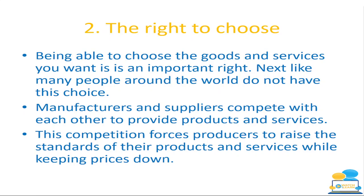It's the same with food — when you go to a restaurant you have so many different choices that a lot of people don't. Manufacturers and suppliers compete with each other to provide products and services — this is why we have so many different forms of electrical products and clothing, because they're all trying to out-compete each other. Think about the fierce competitiveness between Samsung and Apple iPhone products. Apple and Samsung are always trying to out-compete each other, and this is actually good for us as consumers because it means we're getting better products and it's also keeping prices down.